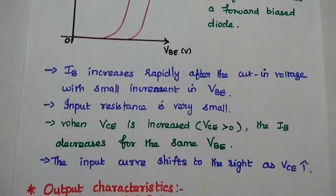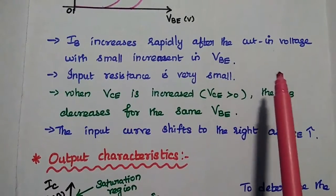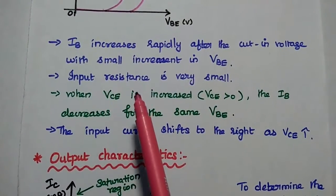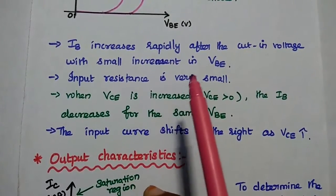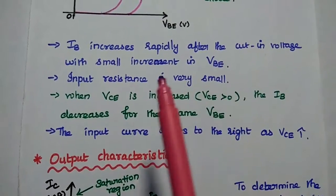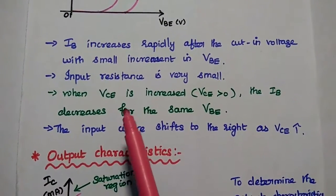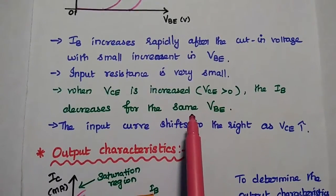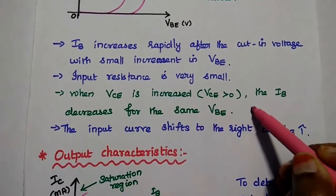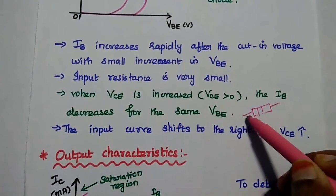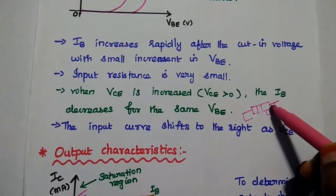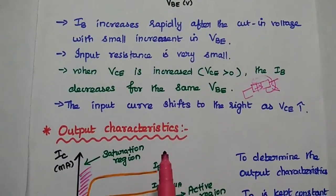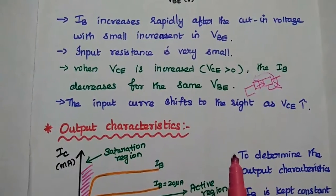The base current increases rapidly after the cut-in voltage with a small increment in VBE, meaning the input resistance is very small. If it is small, then only we can have large current conduction. When VCE is increased — meaning reverse bias voltage is increased — the base current decreases for the same input voltage. If you increase the reverse bias at the output side, automatically it decreases the input current, and the input curve shifts to the right as the output reverse bias voltage increases.